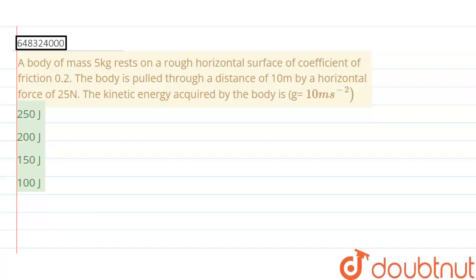Hey guys, we have been given a question. A body of mass 5 kg rests on a horizontal surface of coefficient of friction 0.2. The body is pulled through a distance of 10 meters by a horizontal force of 25 newtons. The kinetic energy acquired by the body is? Take g equals 10 meters per second squared.